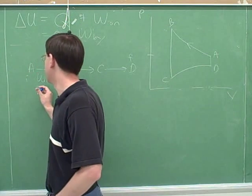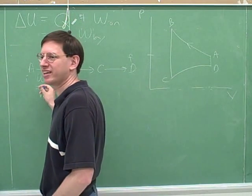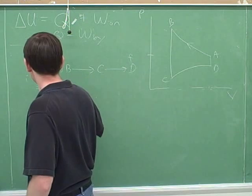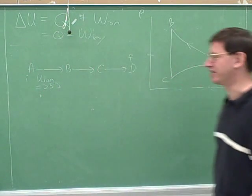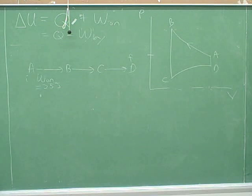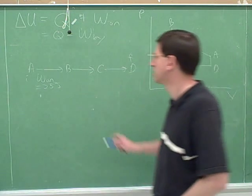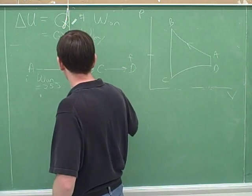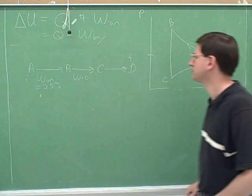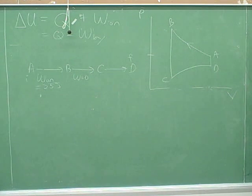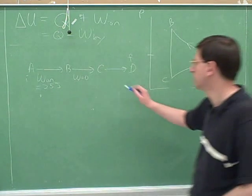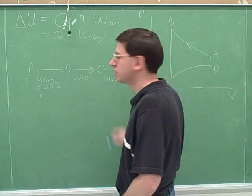Good. Make up a number. What would be a good number for this work? Anything you like. 29. Okay. We just made that number up. But that's a big number. All right. Now how about the work that's done from B to C? Zero. Because it's constant. Good. The volume decreases. So it's work by the gas. Right.